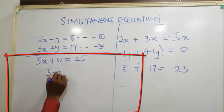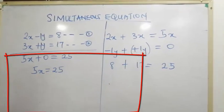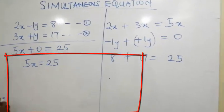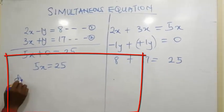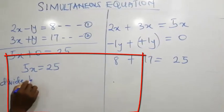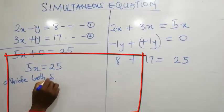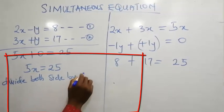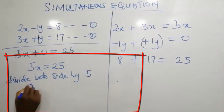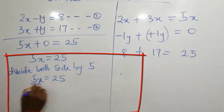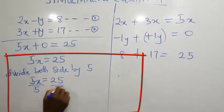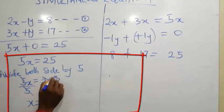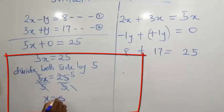We have 5x equals to 25. This becomes what we call simple equation. So, how do you find the values of x here? You divide both sides by the coefficient of x, which is 5. That will be 5x divided by 5 equals to 25 divided by 5. 5 in 5 is 1, that is x. 5 in 25 is 5. So, x is equal to 5.